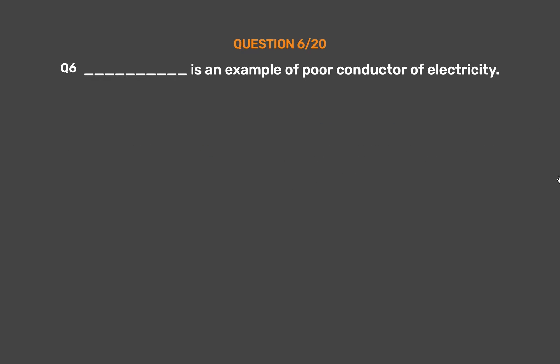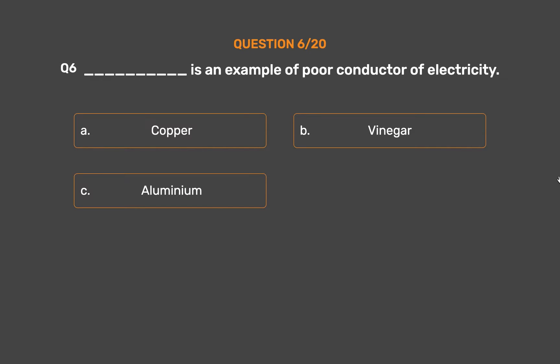Question No. 6: Underscore is an example of a poor conductor of electricity. Option A: Copper. Option B: Vinegar. Option C: Aluminium. Option D: Plastic.